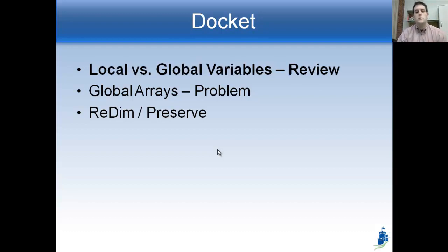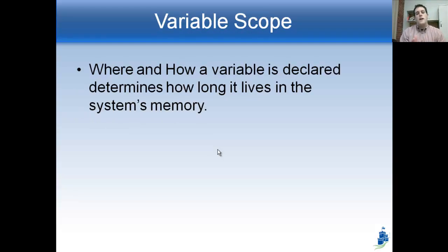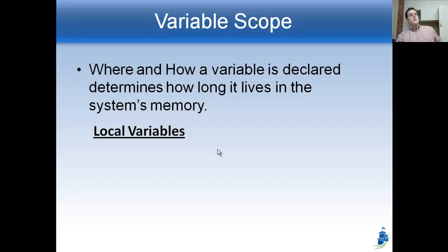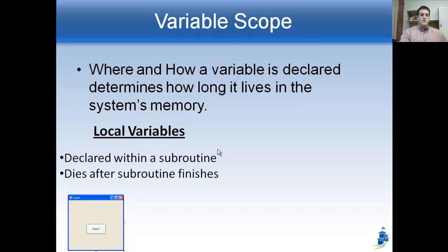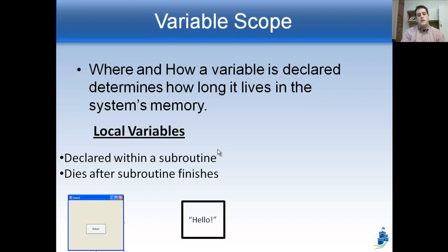So let's talk about local and global variables first — this is a review. Where and how a variable is declared determines how long it will live in the system's memory. Depending on where you declare a variable, it's only usable in certain spaces. If you declare it locally — meaning inside a subroutine — it dies after that subroutine finishes. So if I put it inside a subroutine between Private Sub and End Sub for clicking a button, it'll make a variable, I can put something in it, but once that subroutine is done, the variable goes goodbye.